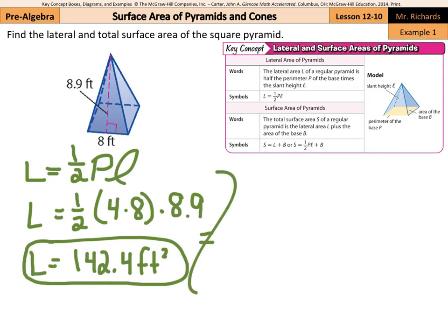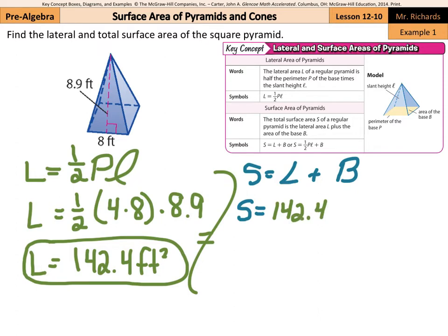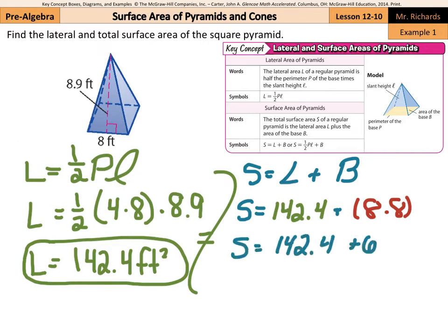For total surface area, surface area equals the lateral area plus the area of the base — and there's just one base on a pyramid. So surface area equals that lateral area of 142.4 plus the area of the base, which is 8 times 8. Surface area equals 142.4 plus 64, which results in 206.4 feet squared.